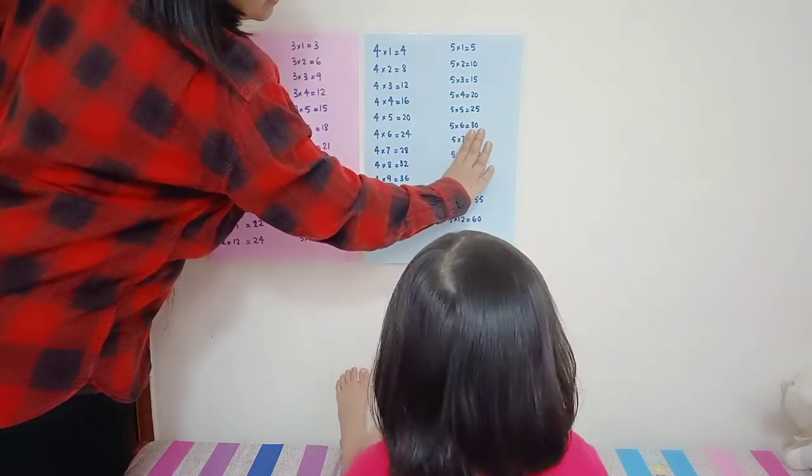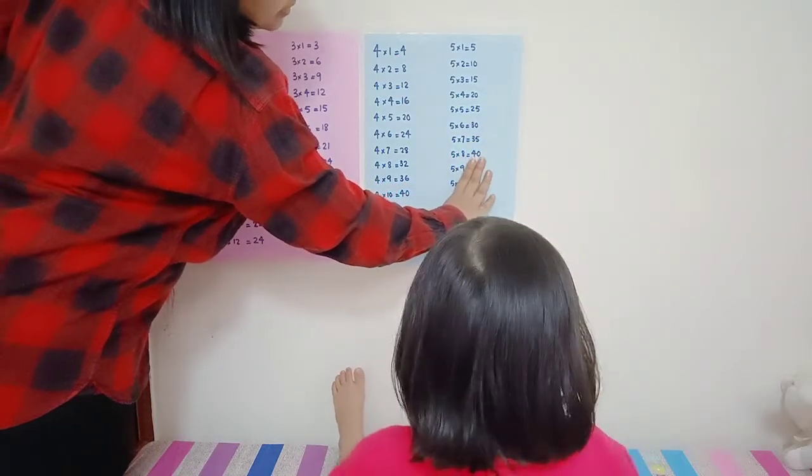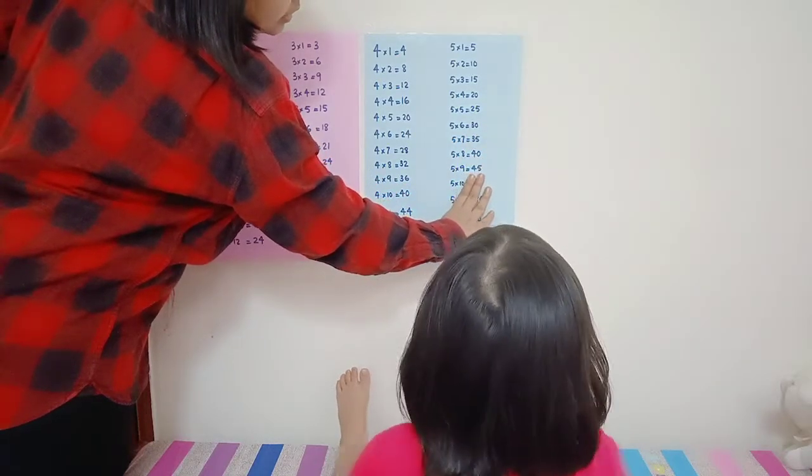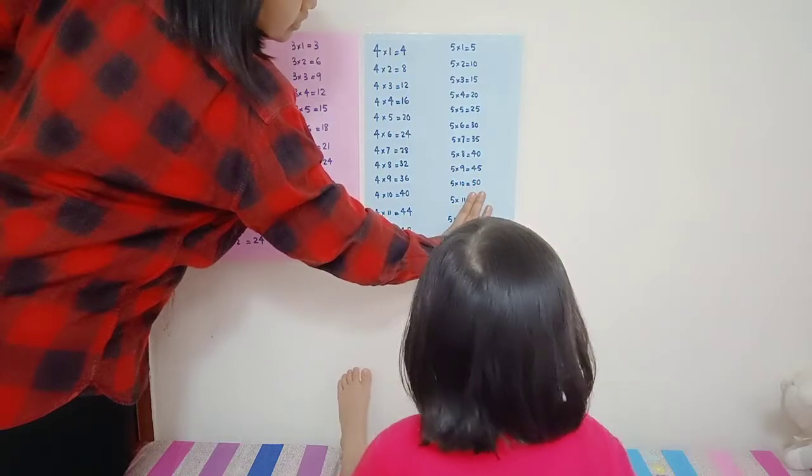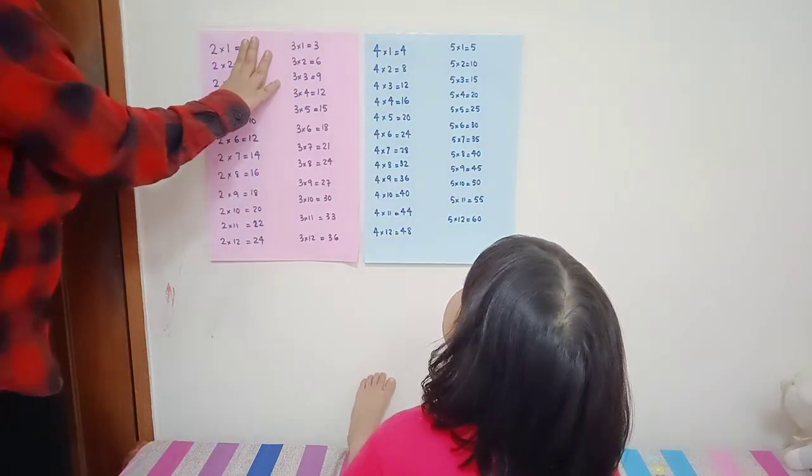Five times six thirty, five times seven thirty-five. Five times three? Forty? Five times nine forty-five, five times ten fifty, five times eleven fifty-five, five times twelve sixty. Two times one...